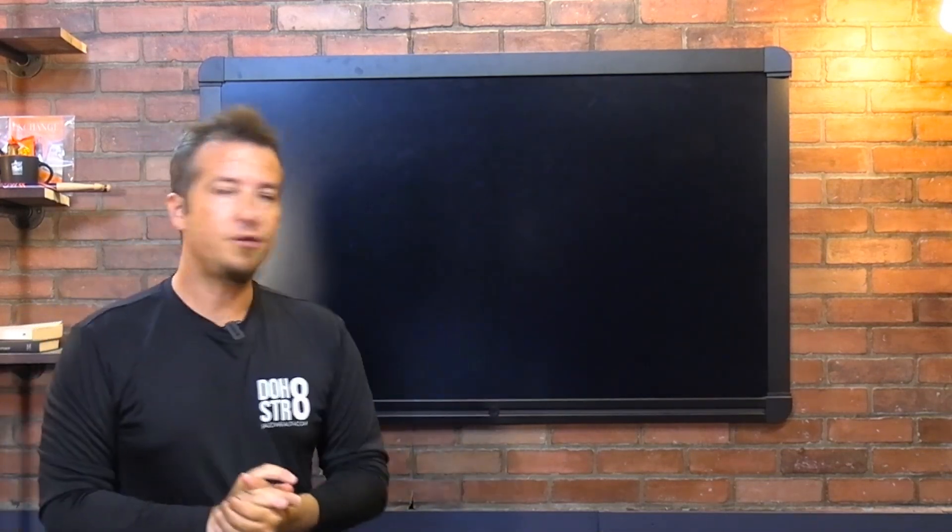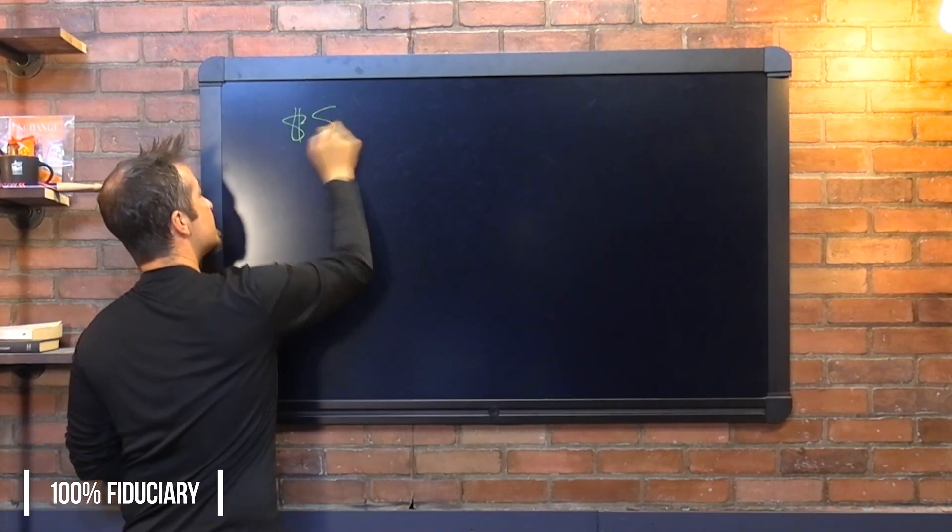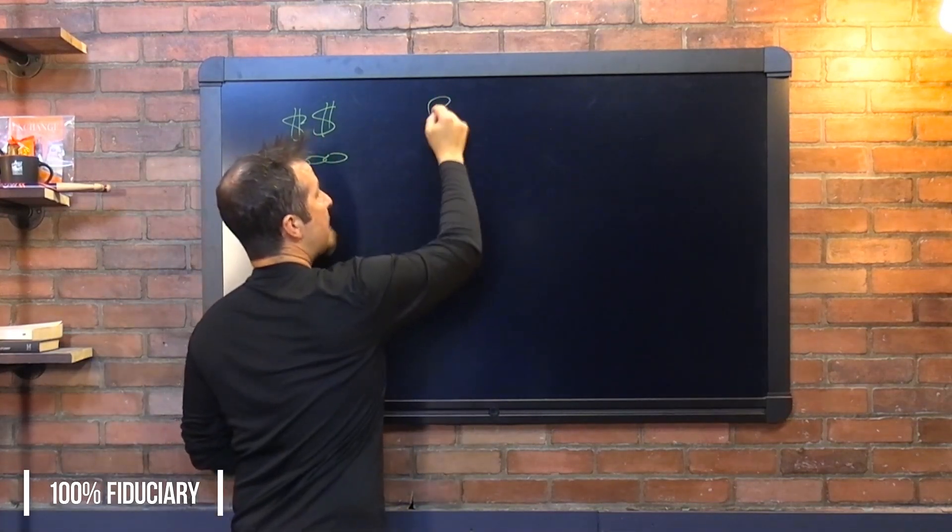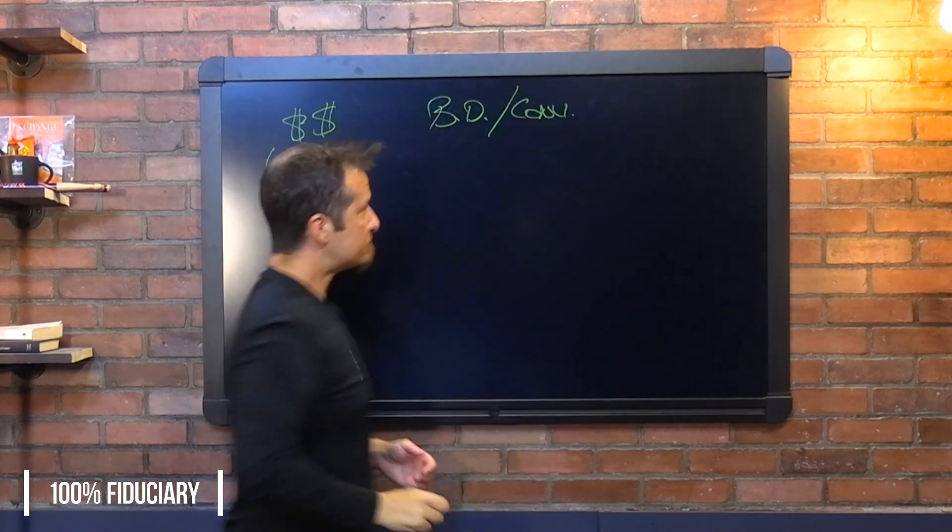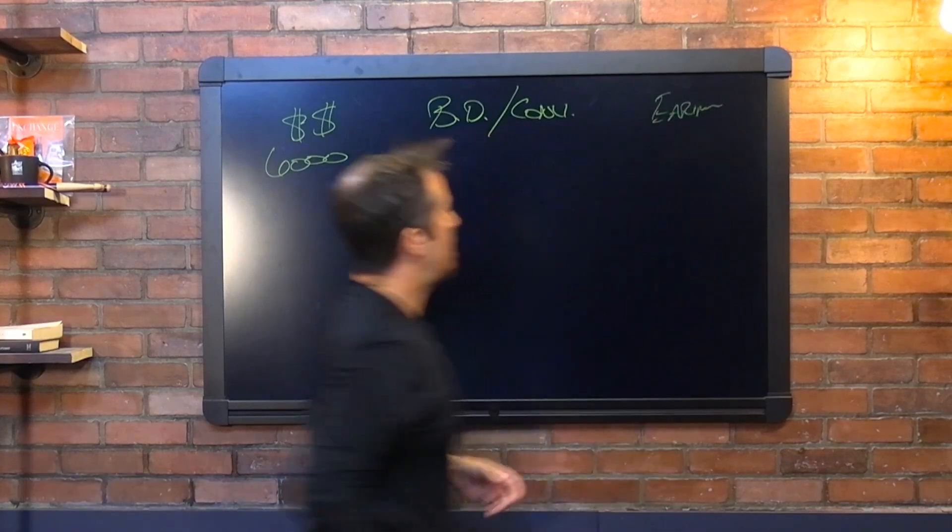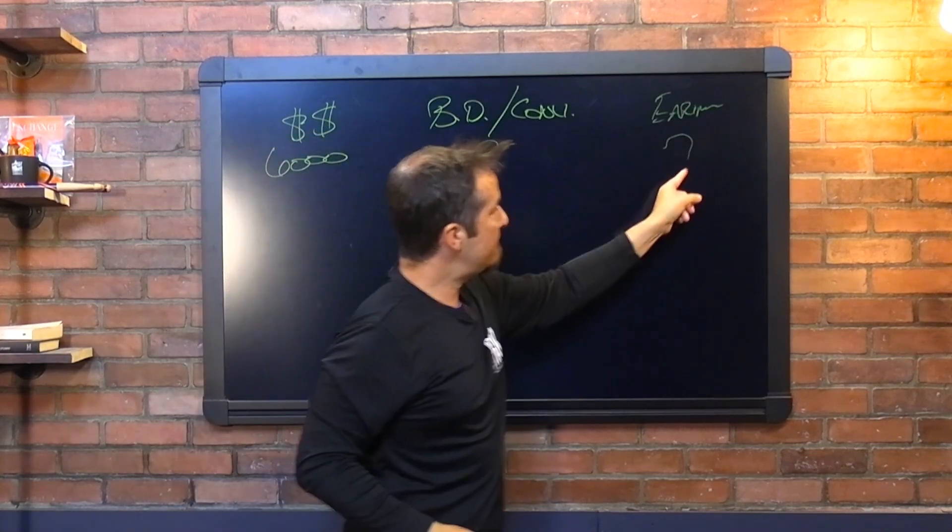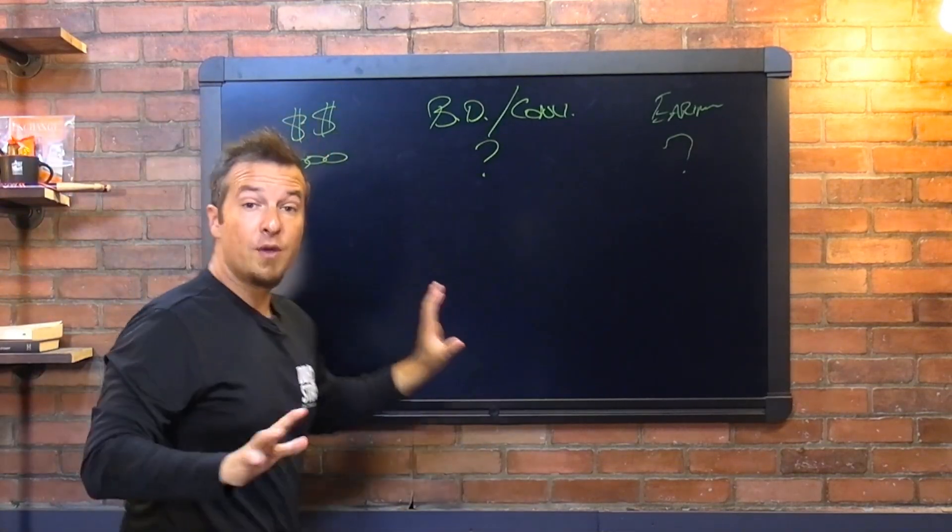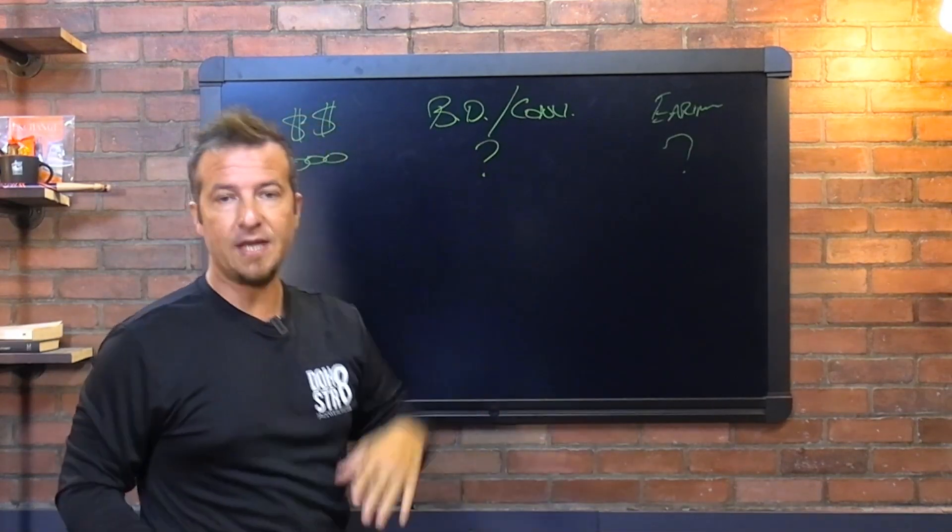But let's take it a step further because a lot of you do regular contributions. So this would just be your normal up to the $6,000 this year. Some of you do backdoor and conversions in a given year, right? And then over here maybe we have your earnings, right, that you made over time. So you've got $6,000, you can convert any amount, and your earnings of course can be any amount as well.